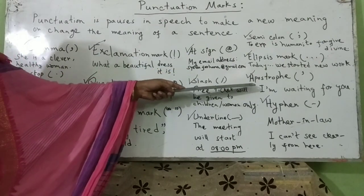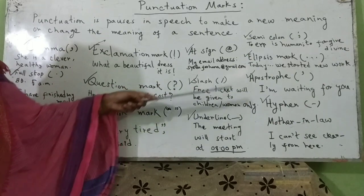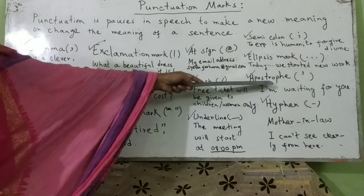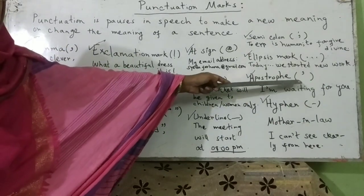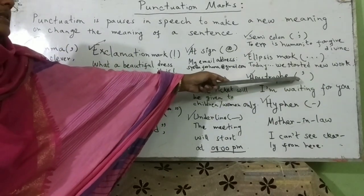Now comes apostrophe. Apostrophe just resembles a comma in appearance. It is used in sentences to show possession or contraction.